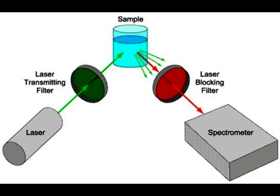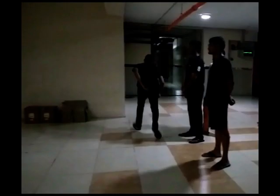Now we will demonstrate the instrumentation of Raman spectroscopy. This is the laser source. This is the screen which makes the laser light monochromatic. This is the specimen. This is the filter which filters the unwanted light particles. Here the data goes in for the formulation of the graph by the computer.